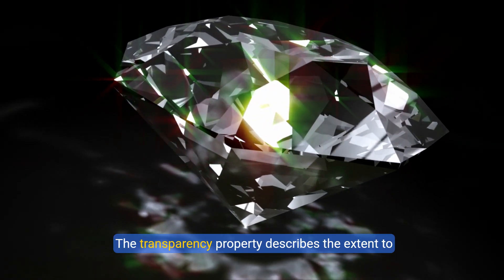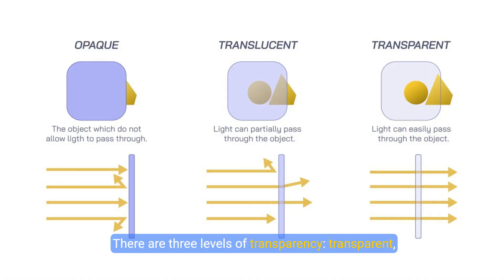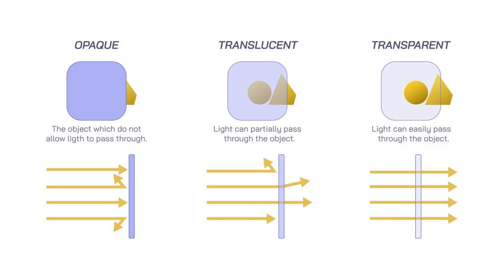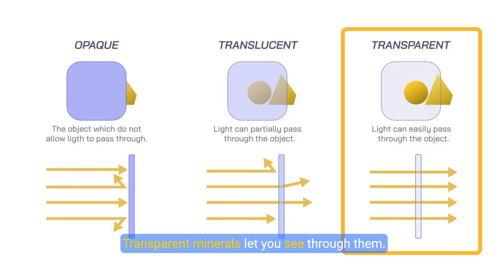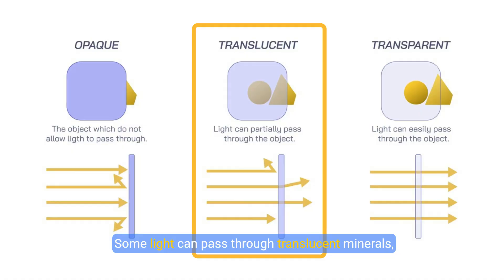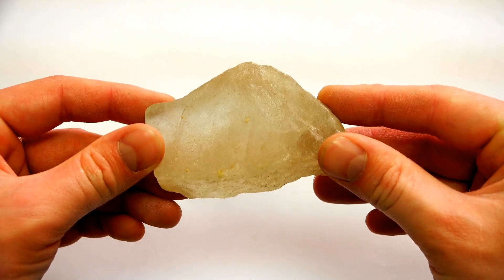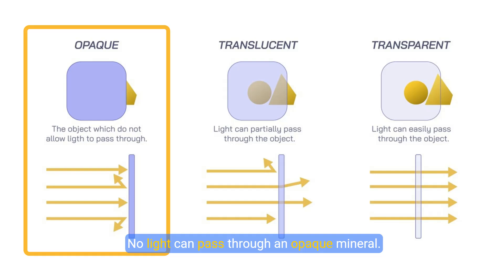The transparency property describes the extent to which a mineral allows light to pass through. There are three levels of transparency: transparent, translucent, and opaque. Transparent minerals let you see through them. Some light can pass through translucent minerals, but you can't see through them. No light can pass through an opaque mineral.